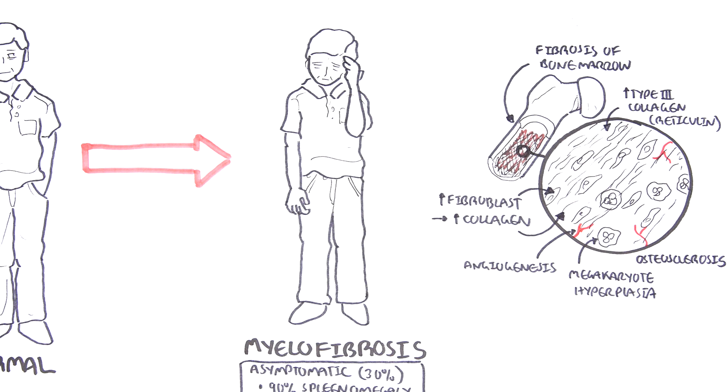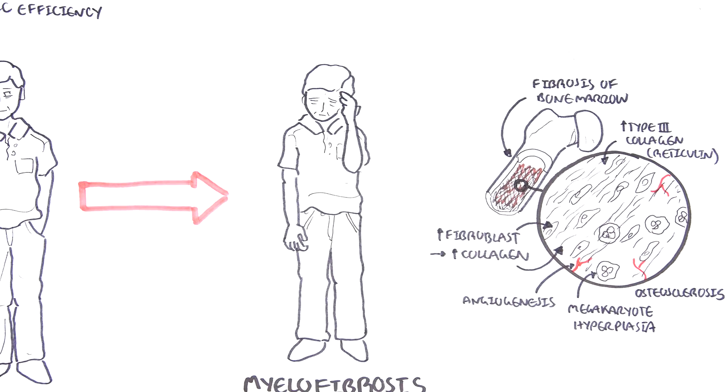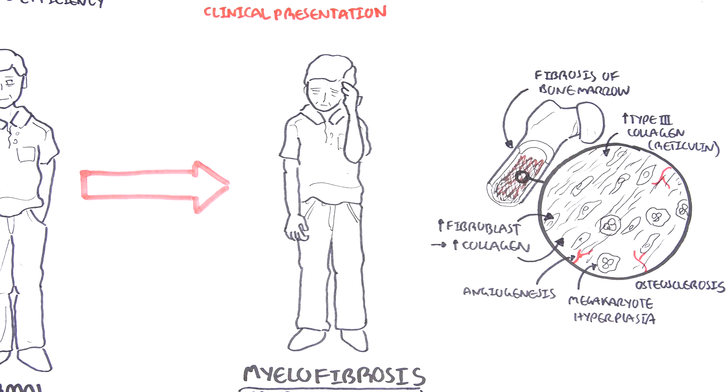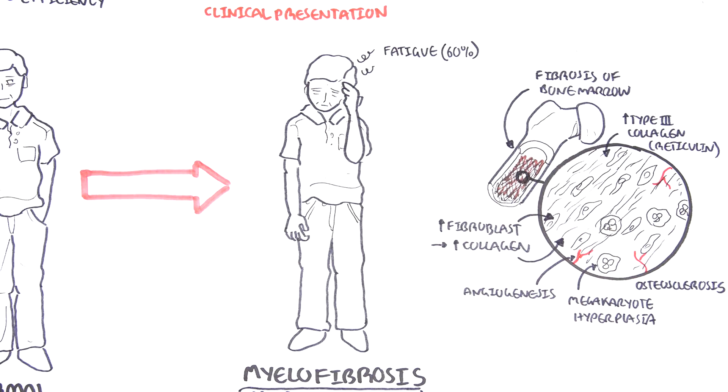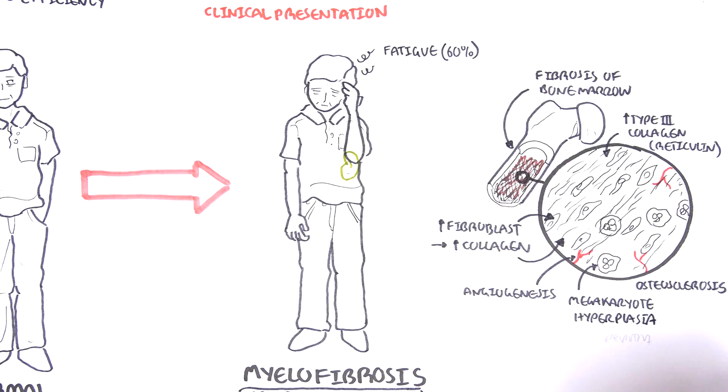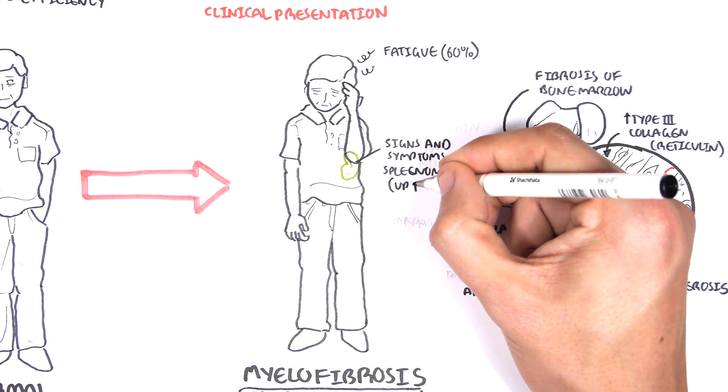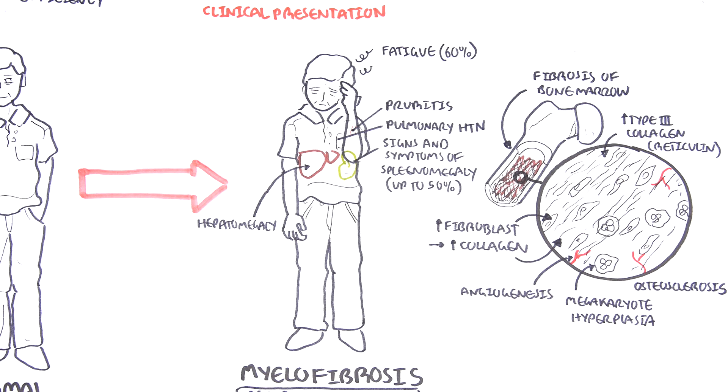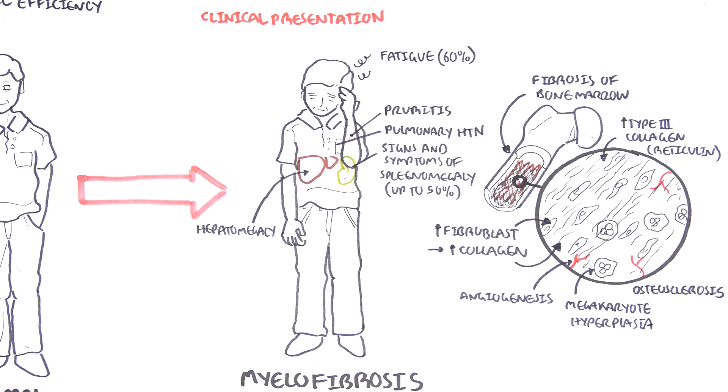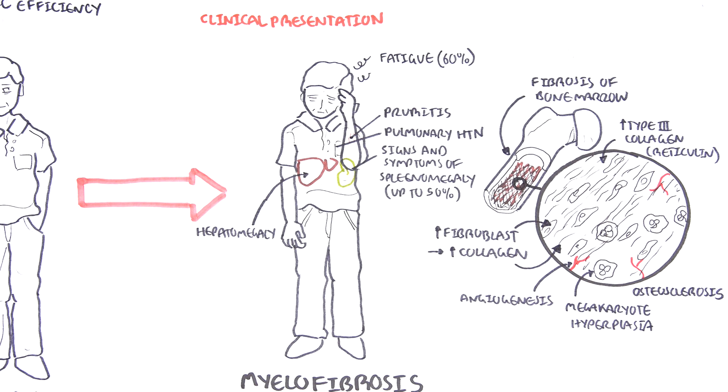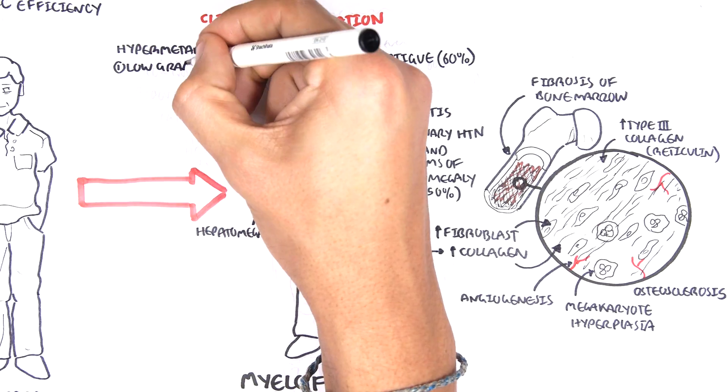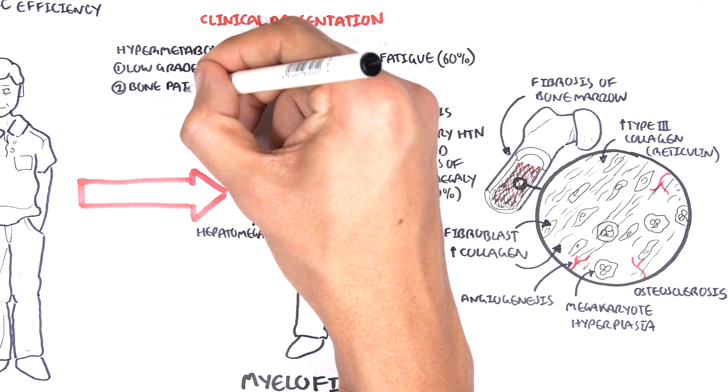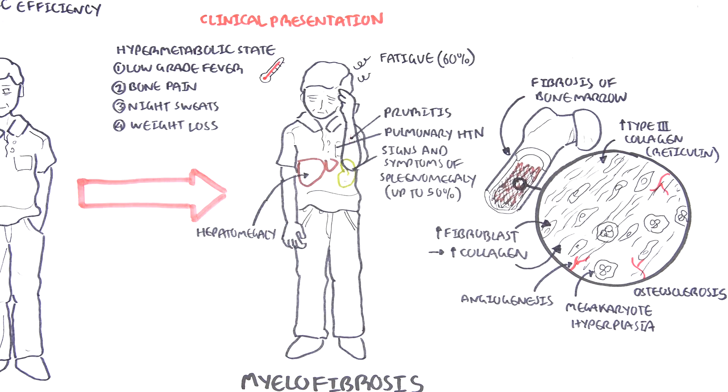Knowing the pathophysiology of primary myelofibrosis, the clinical presentation therefore can include fatigue, which is seen in a majority of cases, 60%, and this is due to anemia. The signs and symptoms can also include splenomegaly, seen in up to 50% of patients, hepatomegaly, pruritus, pulmonary hypertension. It's also important to note that hypermetabolic state or constitutional signs can also be seen, including fever, bone pain, night sweats, and weight loss.